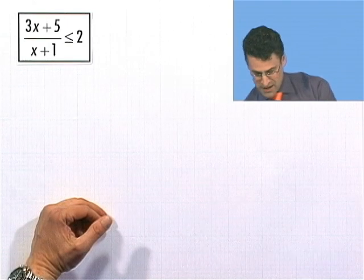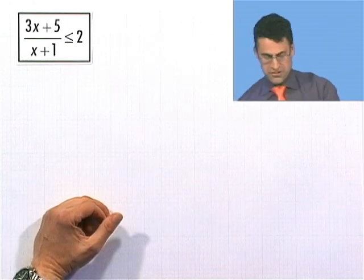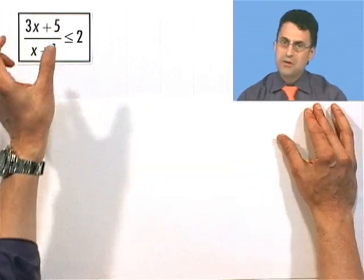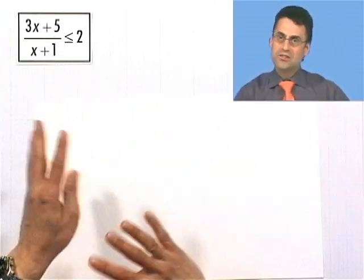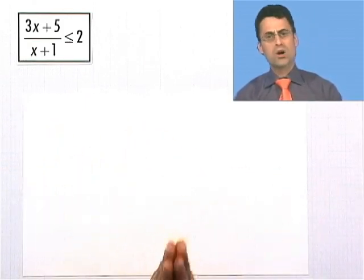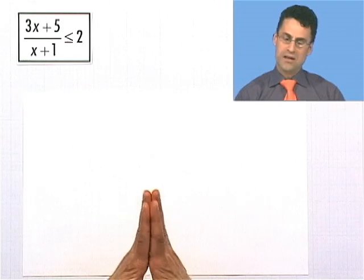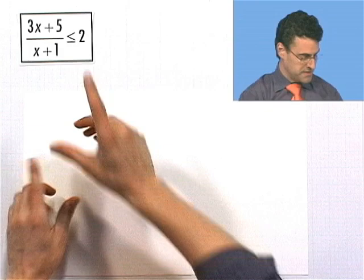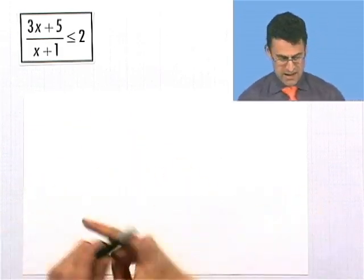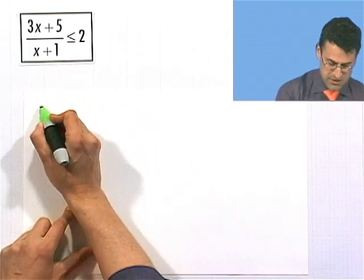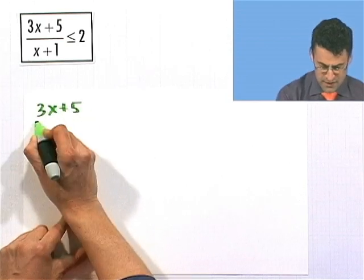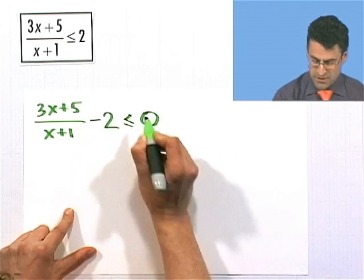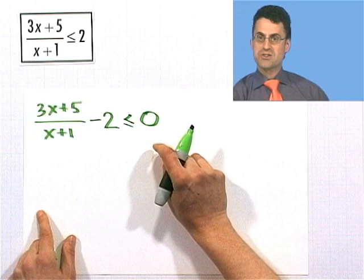So here I have 3x plus 5 divided by x plus 1, less than or equal to 2. Here's a great mistake: to say, when is the bottom equal to 0, when is the top equal to 0? But that only works once you have an inequality where this side actually is 0. So the first step — a great potential place for a mistake — is to bring the 2 over: 3x plus 5 divided by x plus 1, minus 2, is less than or equal to 0.